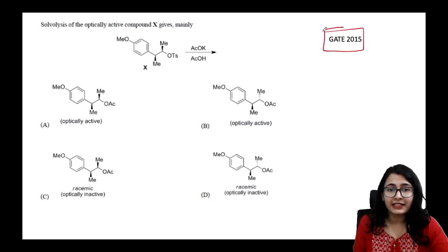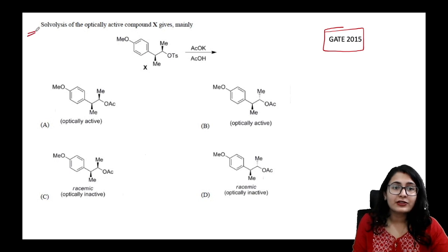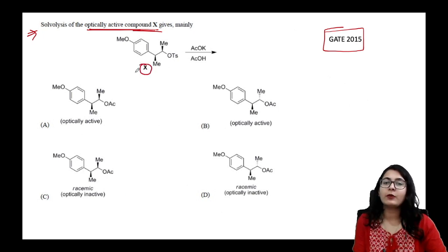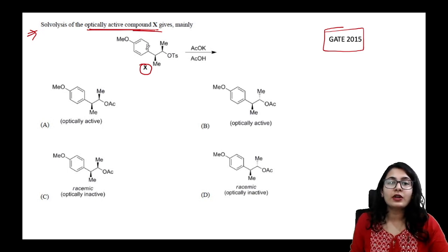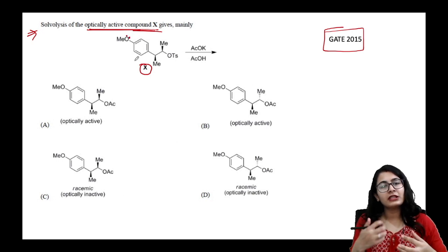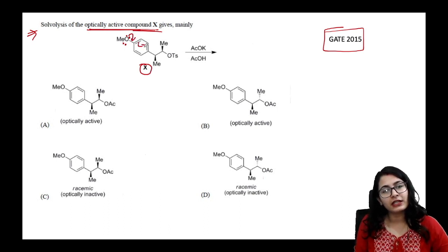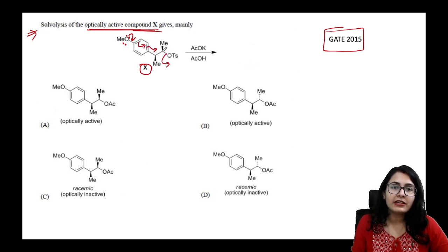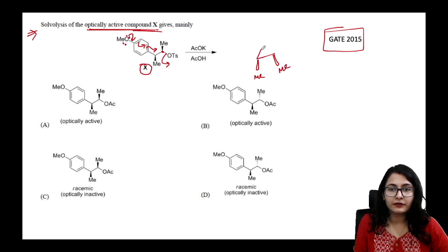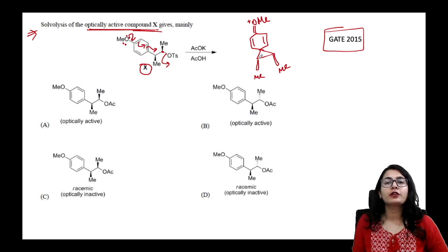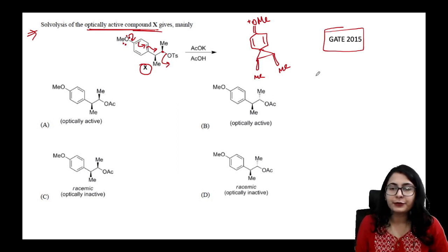A Gate 2015 question asks about solvolysis of an optically active compound X bearing an electron-donating substituted phenyl group. Because the substituent is electron-donating, the phenonium ion forms more easily. Removing the tosylate causes inversion on that carbon, and we draw the phenonium ion intermediate.